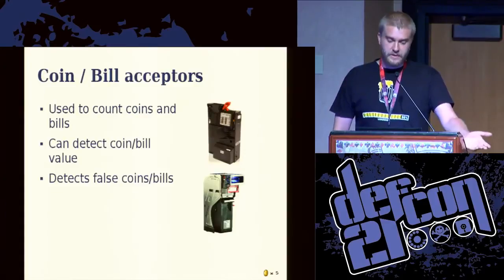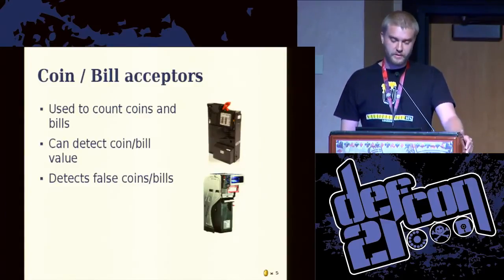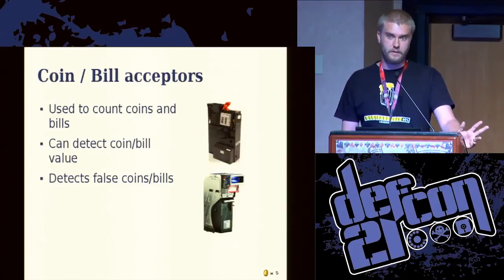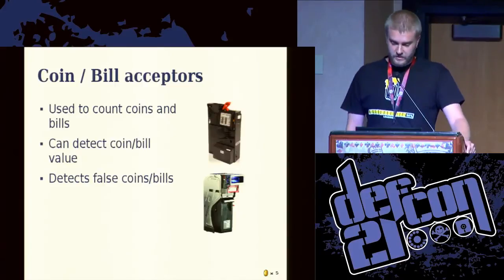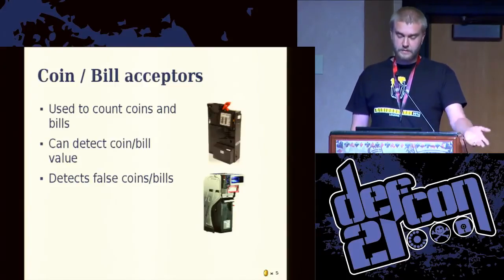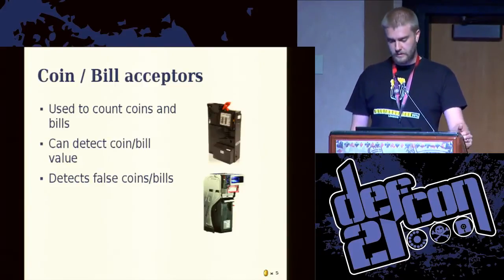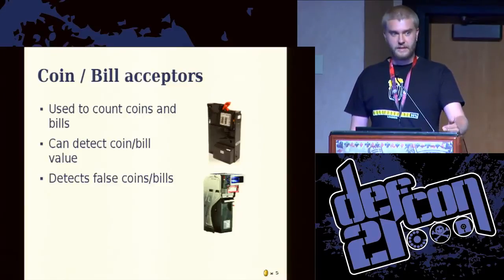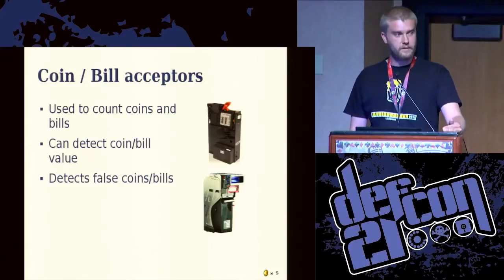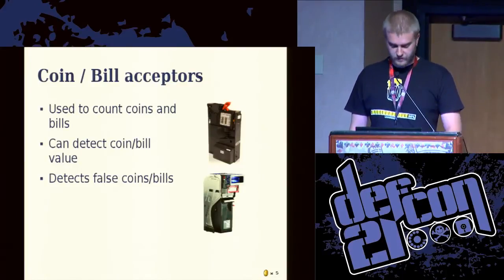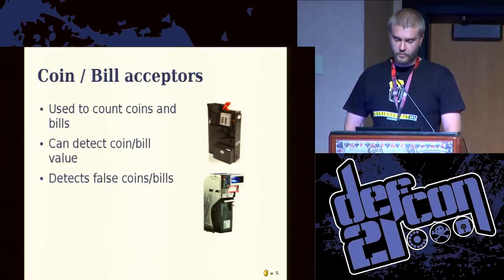It uses different methods to recognize money: the weight, the size, even visually. There are many ways to recognize that. And it's used to send, if the coin has been accepted, to the main board. The main board needs to process the event that a coin has been inserted — for instance, that you have entered one dollar, et cetera.